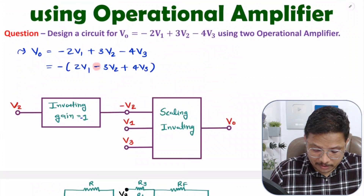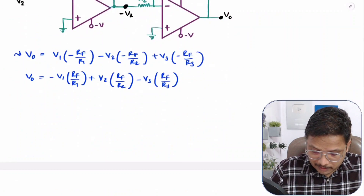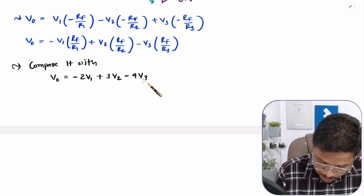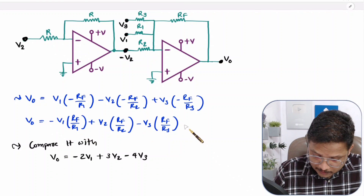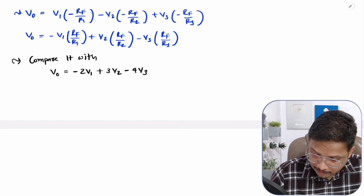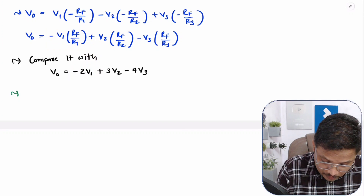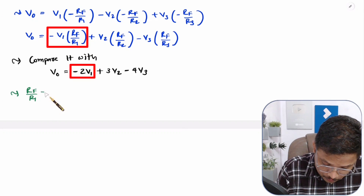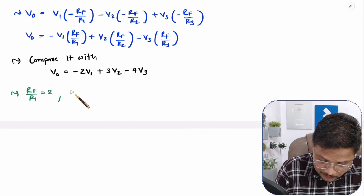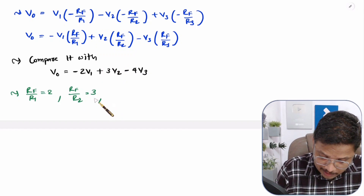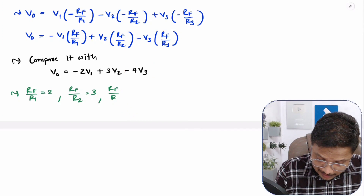Now comparing this derived equation with the required equation V0 equals minus 2V1 plus 3V2 minus 4V3, we get three relations: Rf by R1 equals 2, Rf by R2 equals 3, and Rf by R3 equals 4. Note that the two resistors on the first op-amp are also equal to Rf.